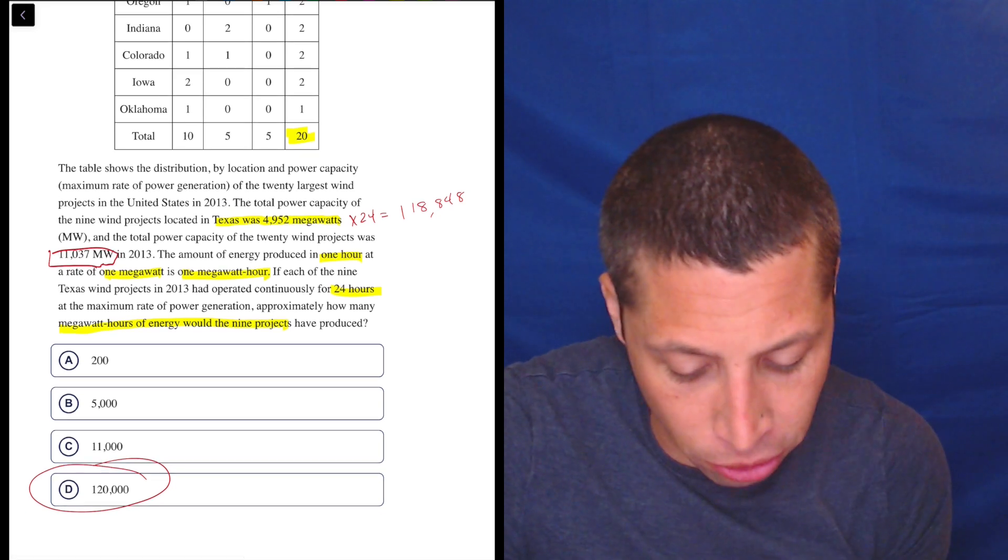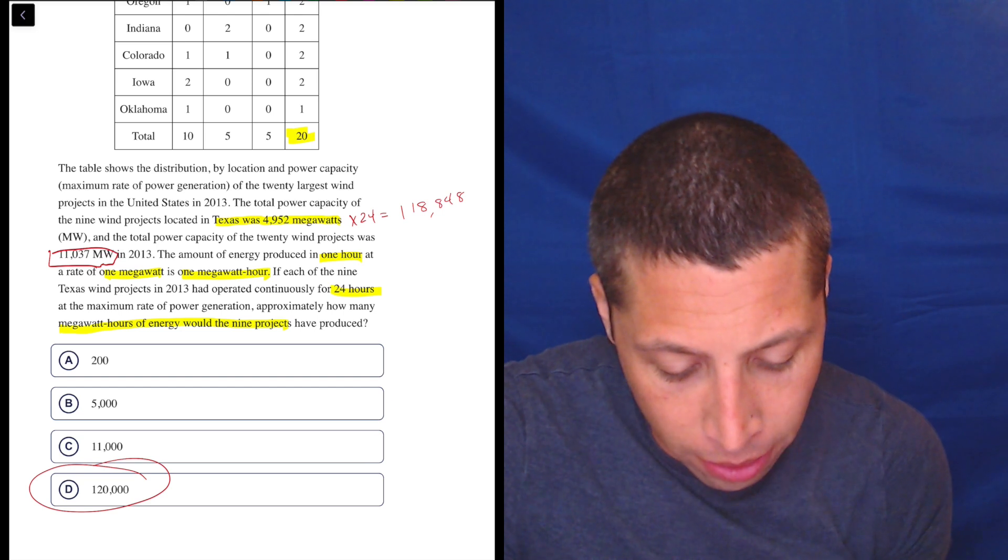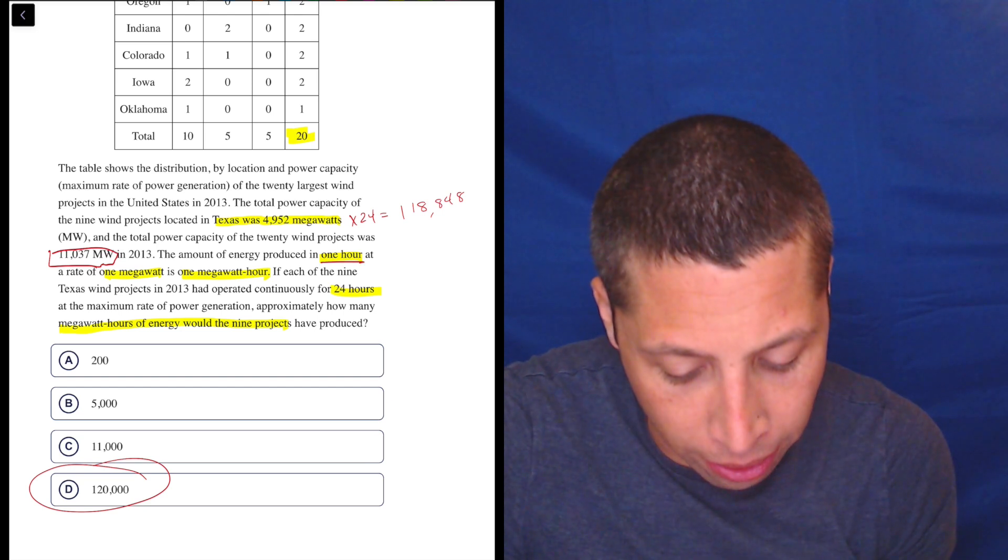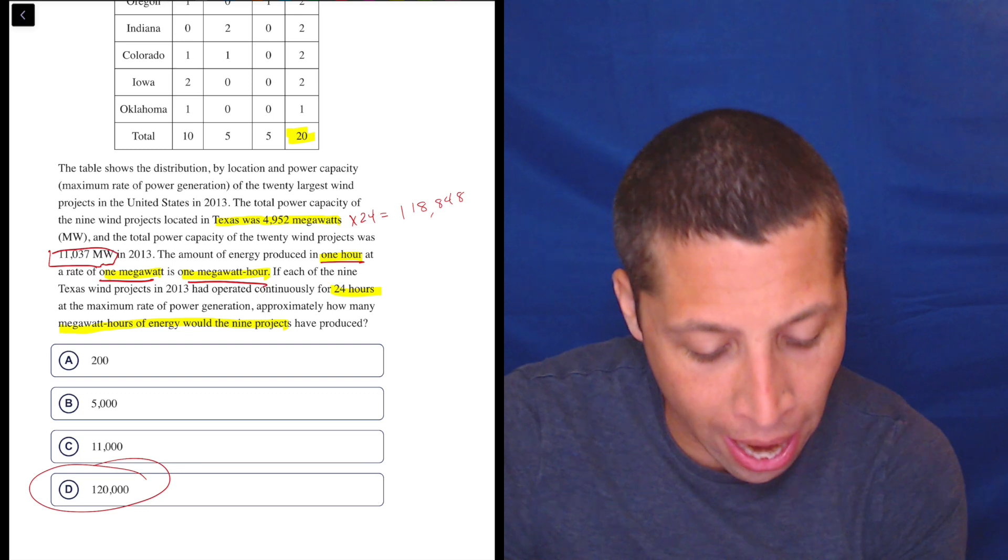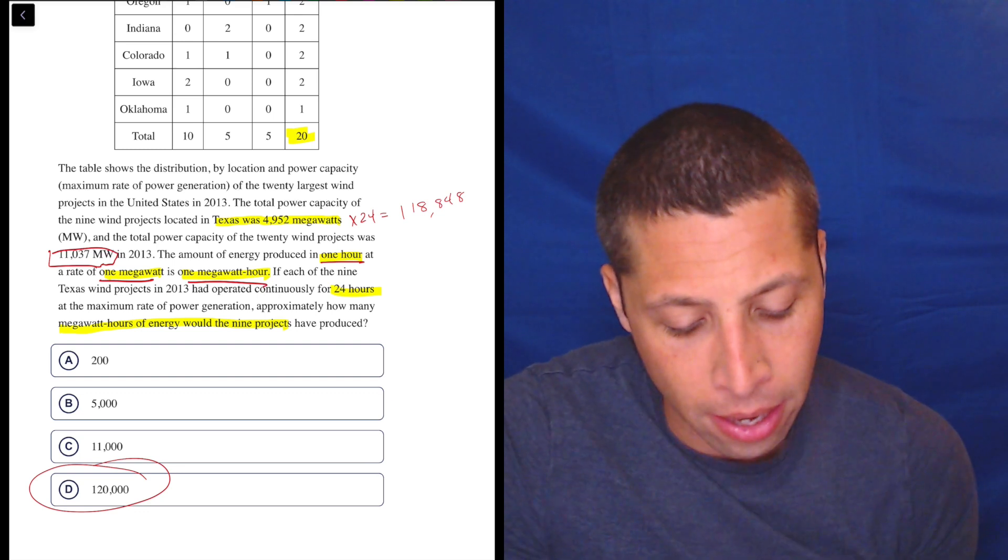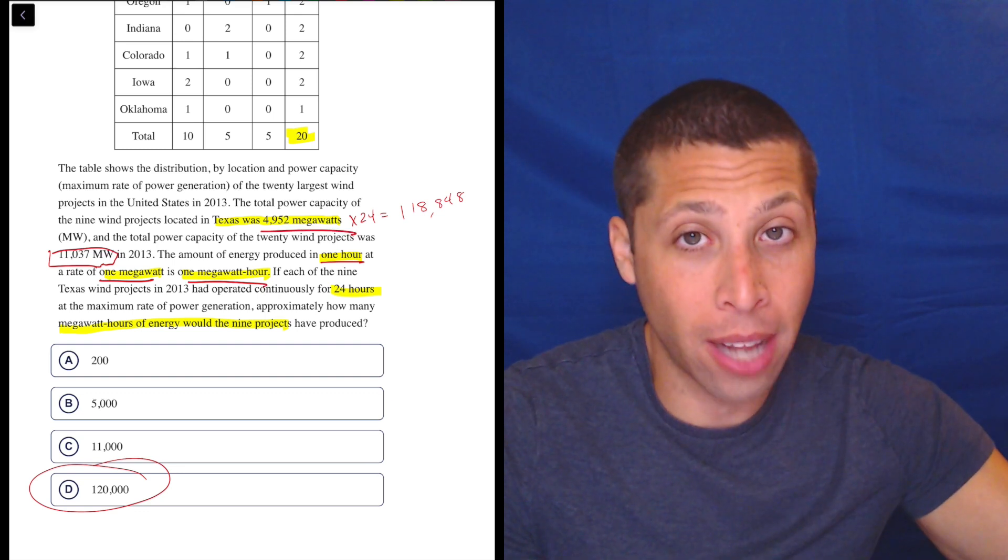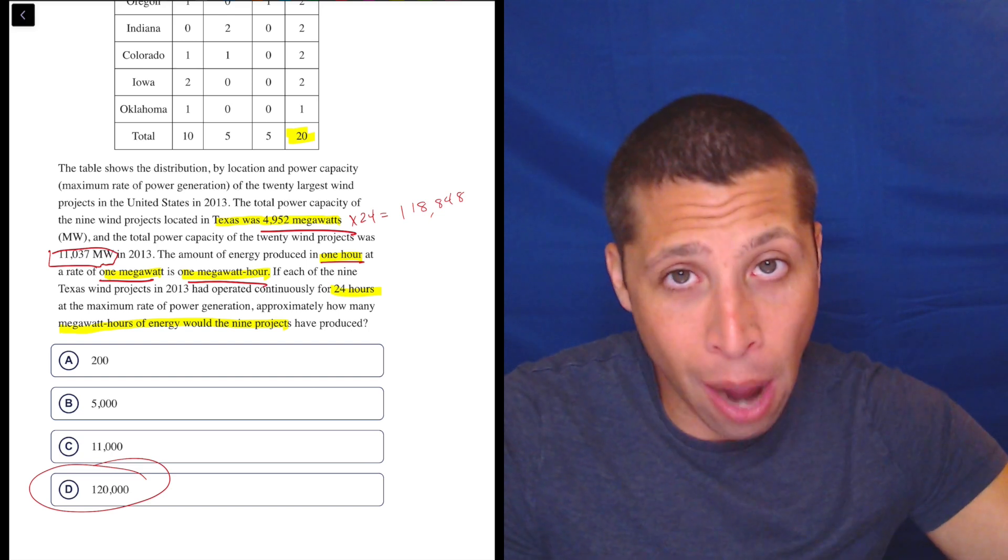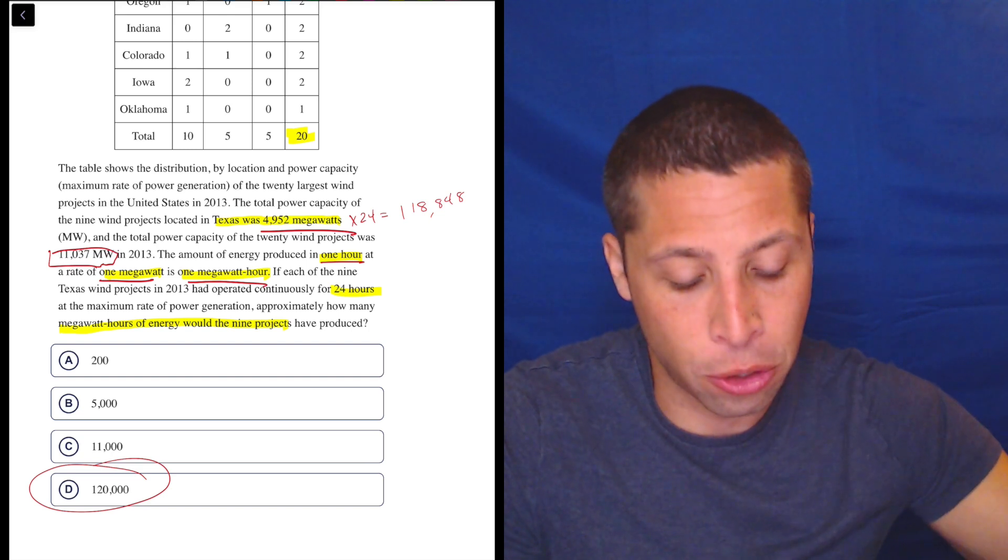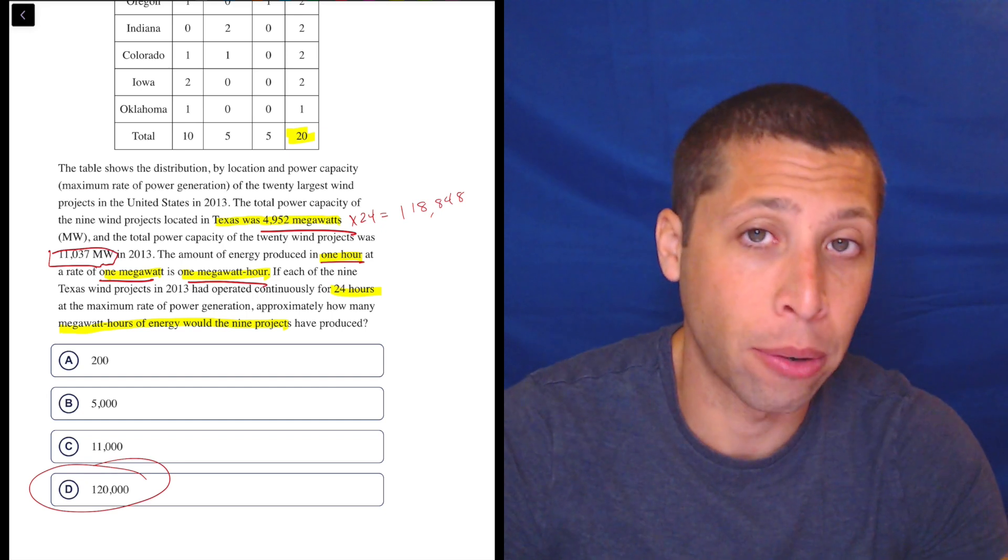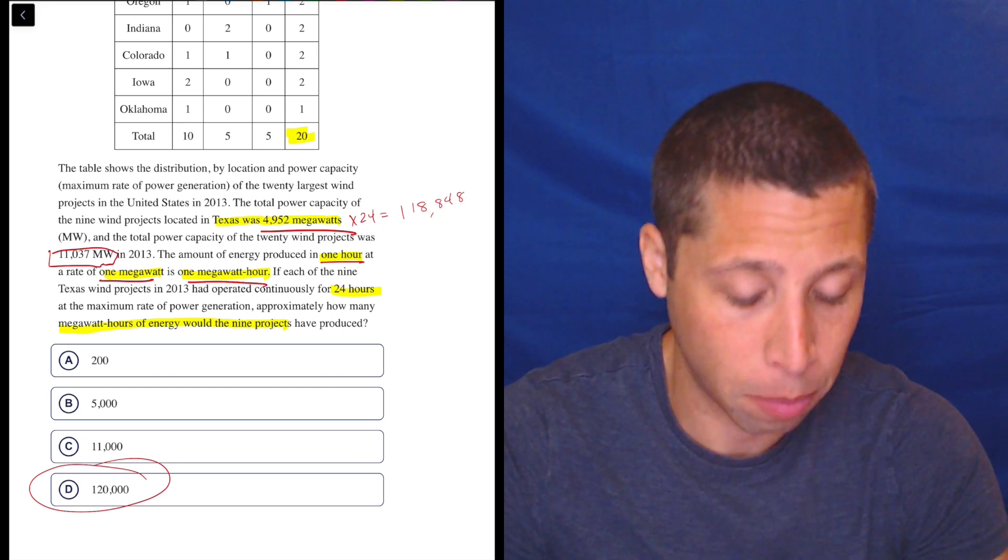The hardest part here is understanding that the one hour thing at a rate of one megawatt is one megawatt hour. And just understanding that if we have these 4,952 megawatts, if we just multiply that by one hour, that would be 4,952 megawatt hours. And then the 24 hours is where the real multiplication takes place.